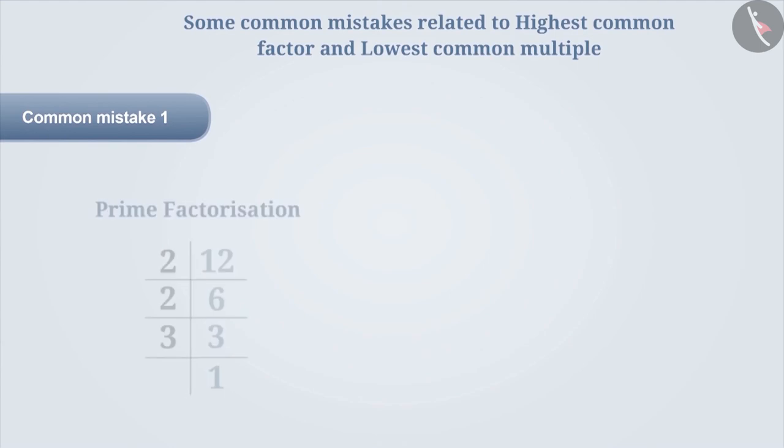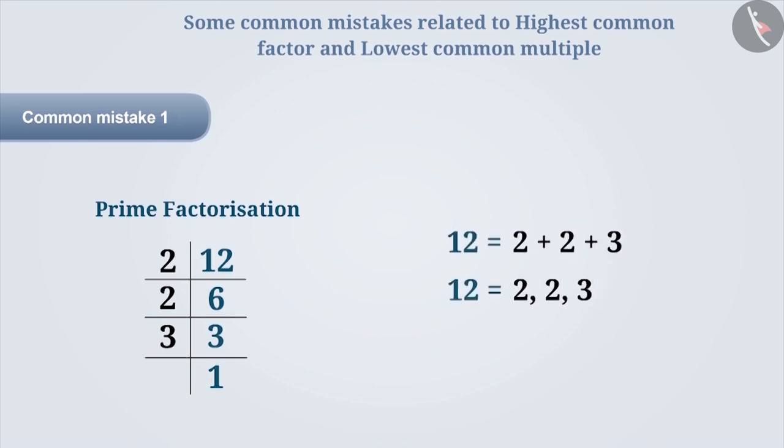Common Mistake 1. While representing the factors obtained by prime factorization, sometimes addition or comma signs are used. It is very necessary to understand that while representing the prime factors, multiplication sign must be used.